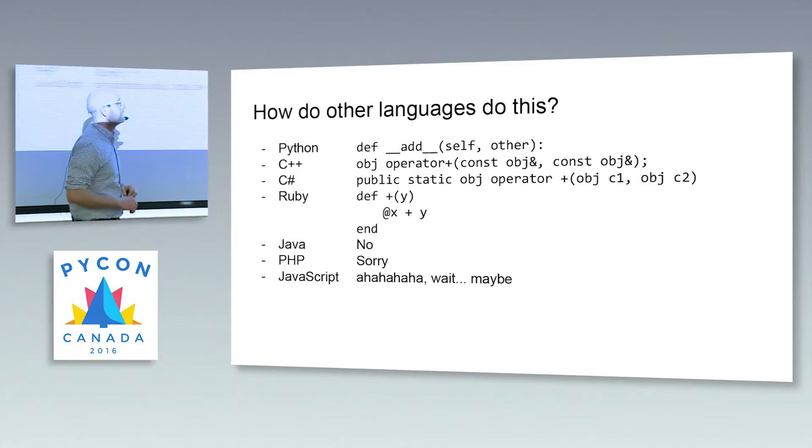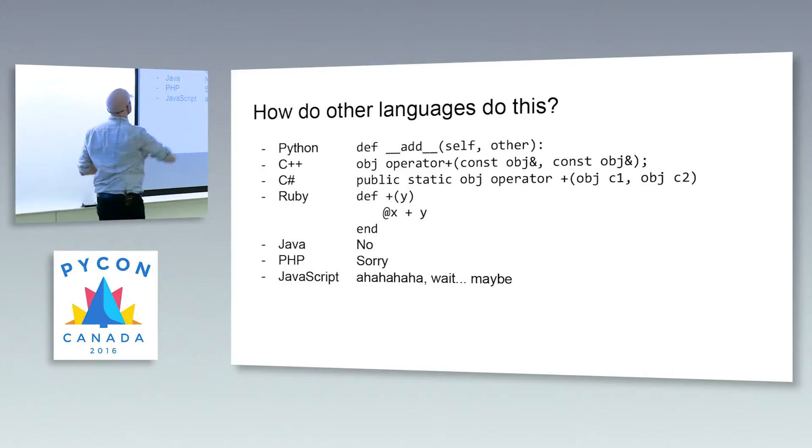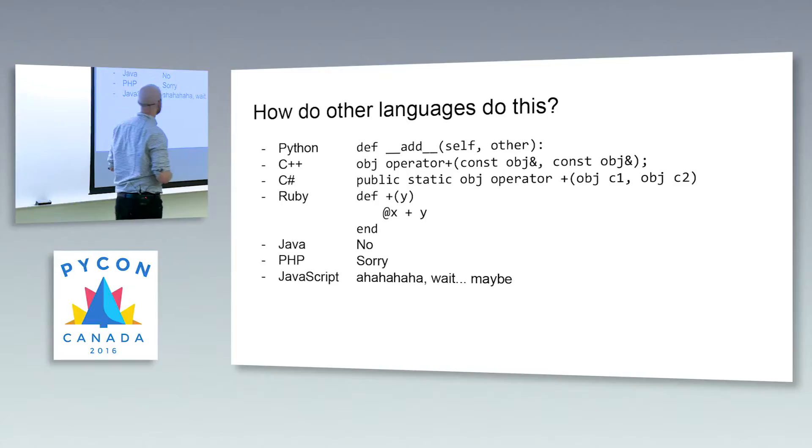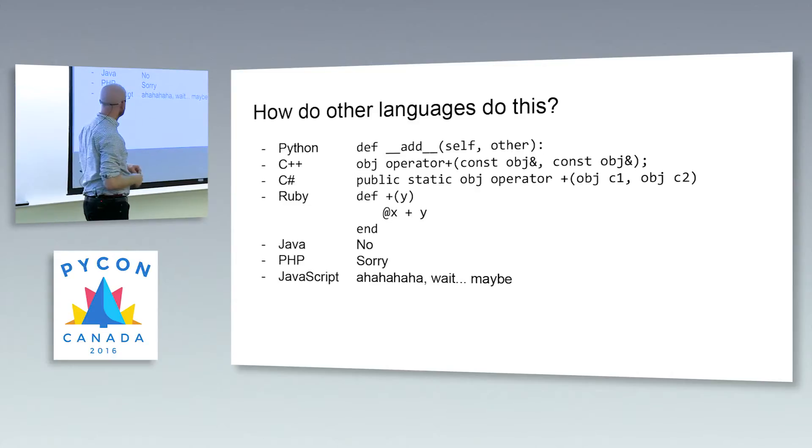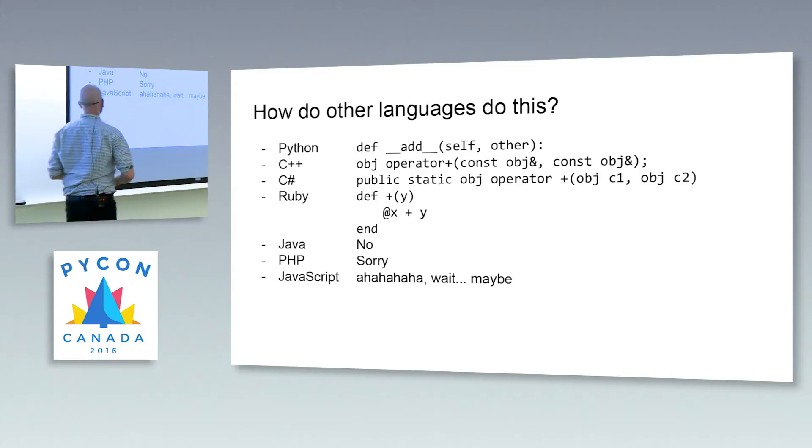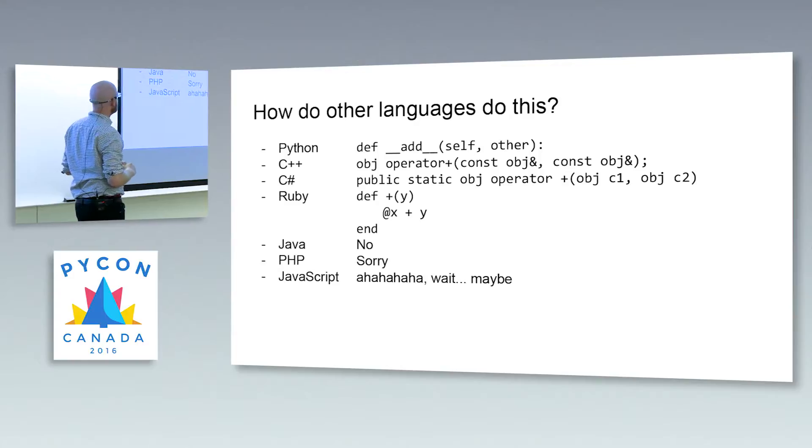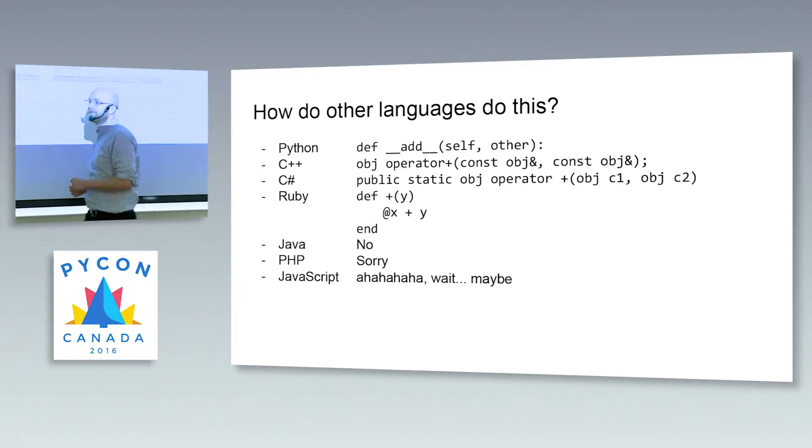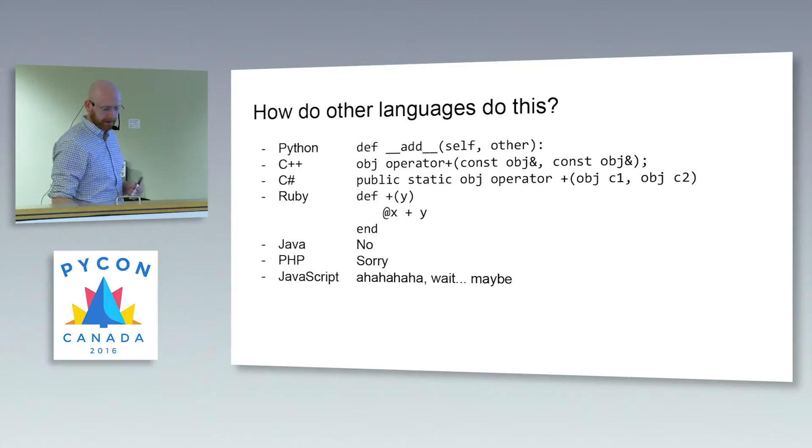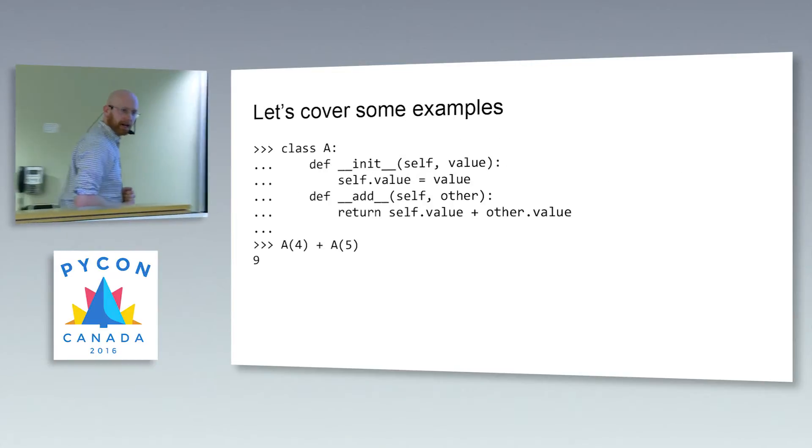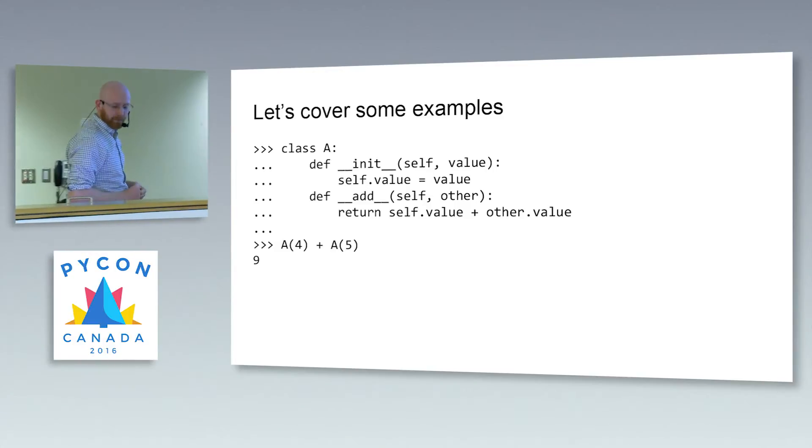How do other languages handle this? Well, Python's pretty clean. C++ is, there's definitely more characters on that line right there. C sharp, even more letters and numbers and symbols. Ruby, it takes three lines. Actually, hold on, that's not fair. It takes less. I'm not trying to sway you towards Ruby. That does look pretty clean though, right? Java, no, there's no real way to overload that in the bit of research I did. PHP, no. JavaScript. Yeah, that ain't happening unless something wild's happening in the next iteration.